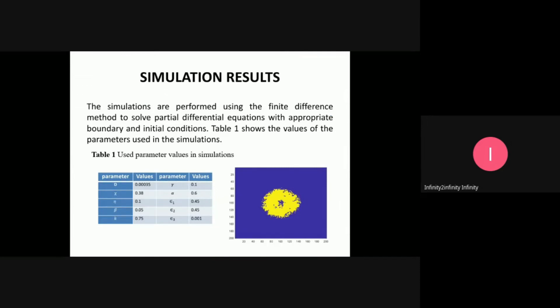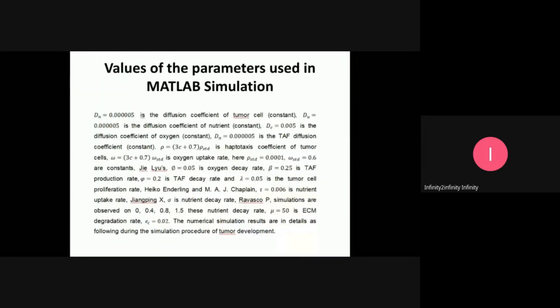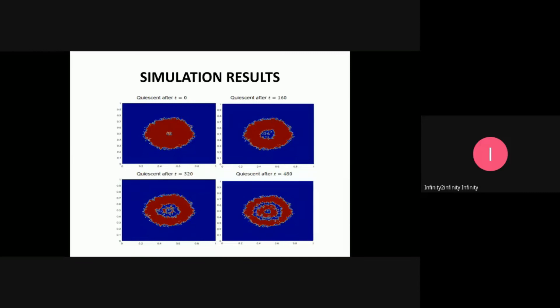In the simulation results, simulations are performed using the finite difference method to solve the partial differential equations with appropriate boundary and initial conditions. Initially, the proliferating cells are set to one, and dead cells are zero on the boundary conditions. These values of parameters and coefficients are used in the partial differential equations to solve and simulate in MATLAB.